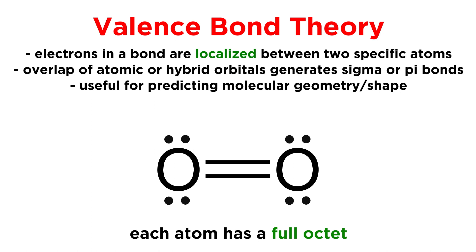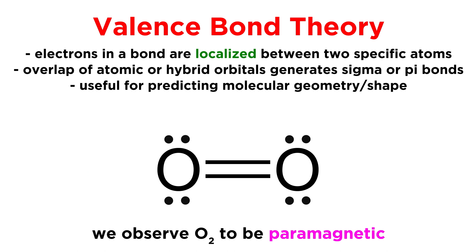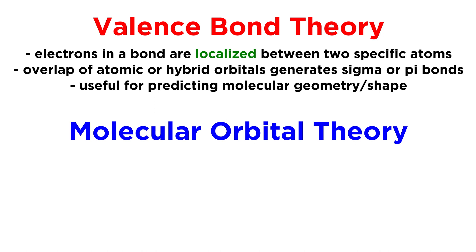Given this Lewis structure, where each oxygen atom has a full octet, we would expect oxygen to be diamagnetic and weakly repel a magnetic field. However, it does in fact exhibit paramagnetism, as liquid oxygen is attracted to a magnetic field. To explain this, we have to turn to molecular orbital theory.